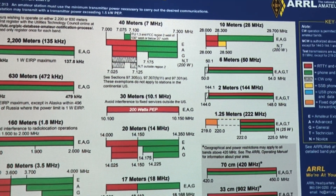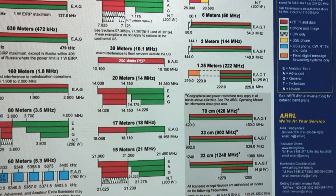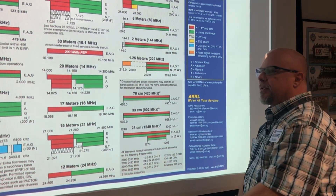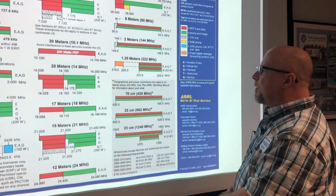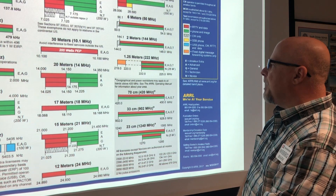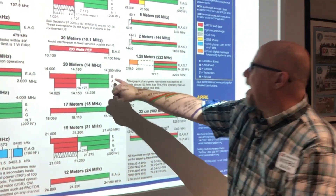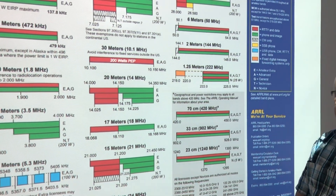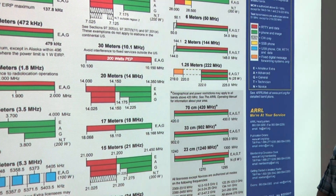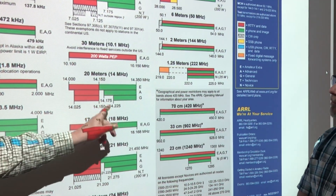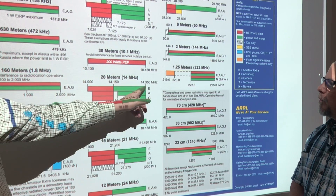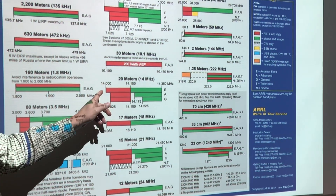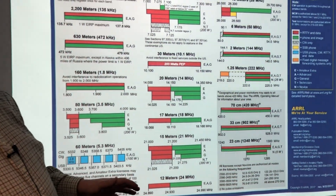On 20 meters it's a little special — once you get your general class upgrade you get a lot of phone privileges, but there's a break in 20 meters where the old legacy advanced class license — marked with an A — had more frequency allocation than a general class but not as much as an extra. That's why everybody really wants to upgrade to extra, because you get the entire band on all bands as an extra class.